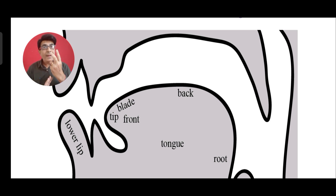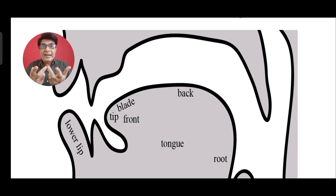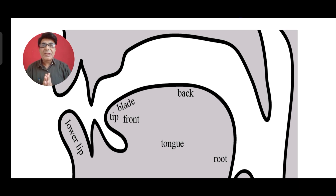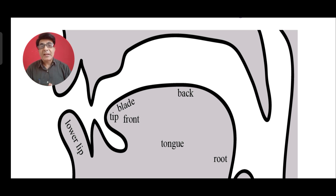In short, there are two airstreams — Ingressive and Aggressive — and there are three initiators: the diaphragm or lungs, the glottis, and the tongue. I hope this video is helpful to you. Please share this video among your friends and classmates. Thank you for watching.